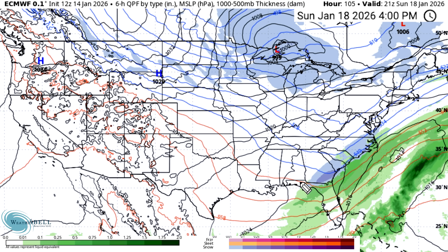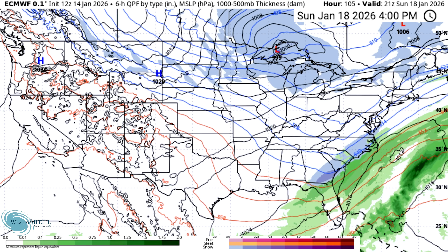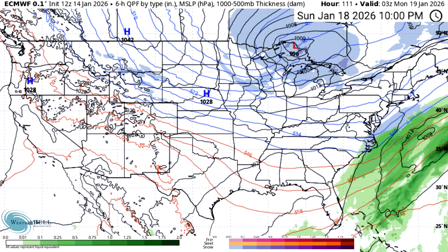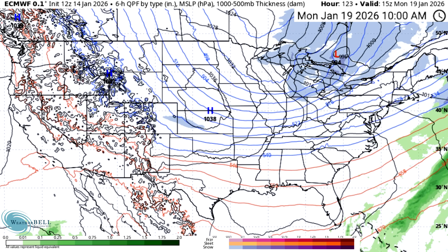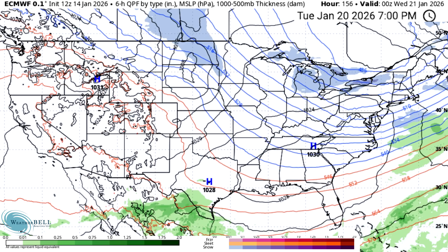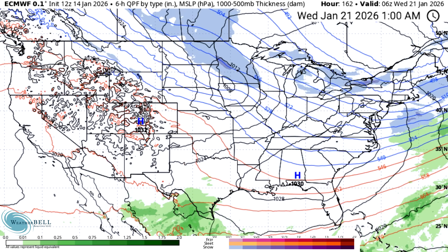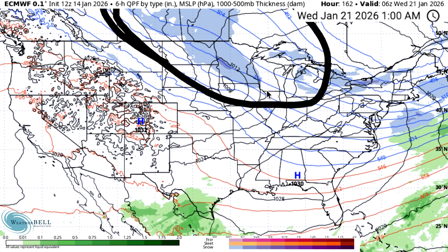Moving towards Sunday on the European model, the storm is very far suppressed to the southeast — essentially from the Florida panhandle up into southeastern Virginia — with a chance of a few inches of snowfall. This would not only be a more southeast-suppressed storm on the European model, but also a much less intense storm than the GFS model. The cold air just kind of lingers.